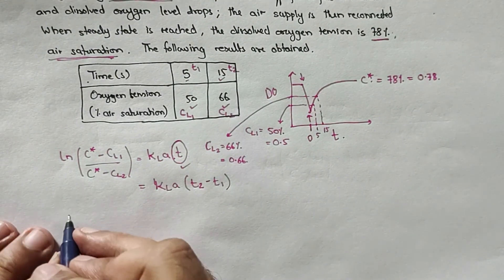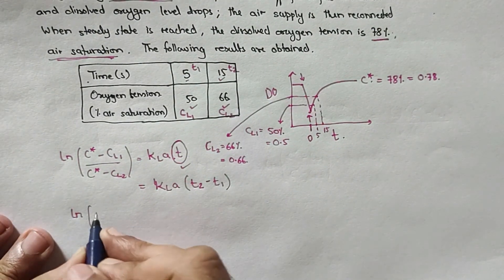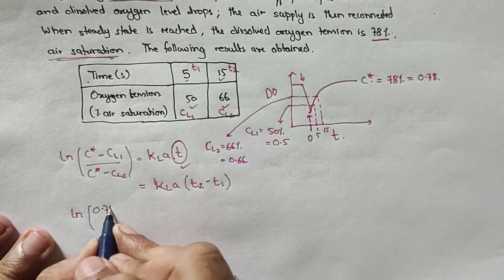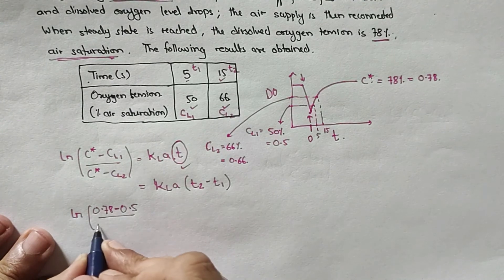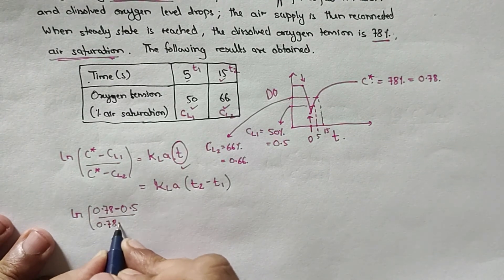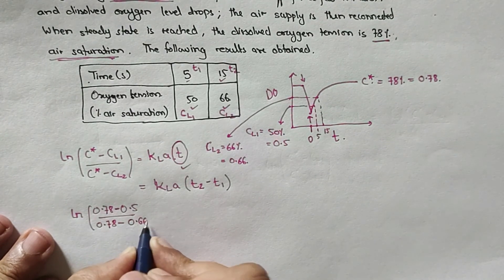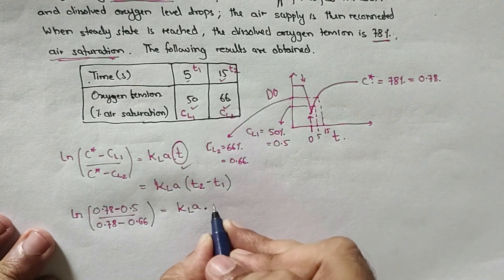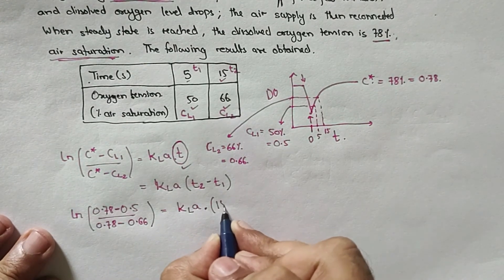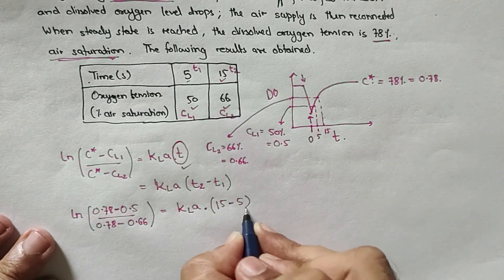So let us put all the values. ln(0.78 - 0.5)/(0.78 - 0.66) = KLA × (15 seconds - 5 seconds).